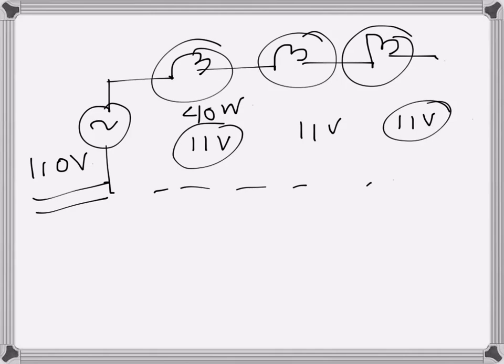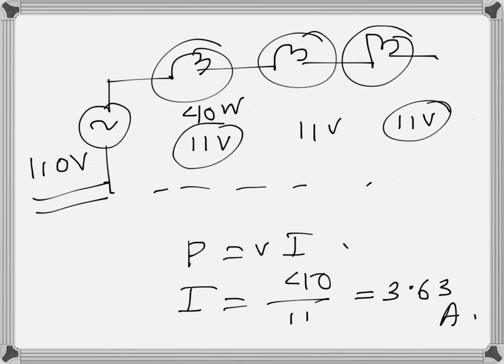We can use just the drop across one of the bulbs to find the current through the circuit, since it will be the same current. P is V times I once again, and I here will be 40 over 11, which is 3.63 amps. So that will be the current in this case.